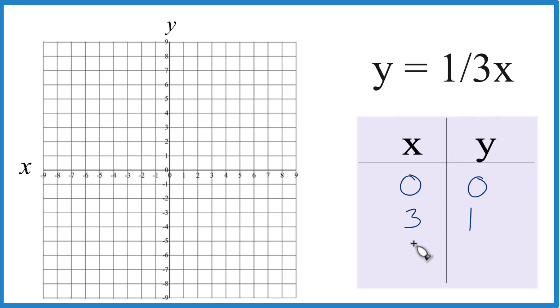How about we put negative three in, because one-third times negative three, that's negative one. So again, you can choose any values you want, but if you're smart about it, it could be a lot easier to graph.